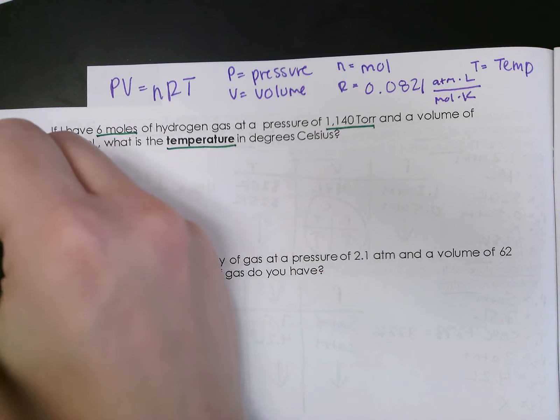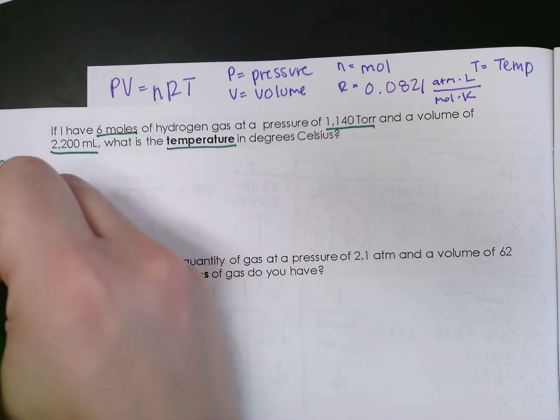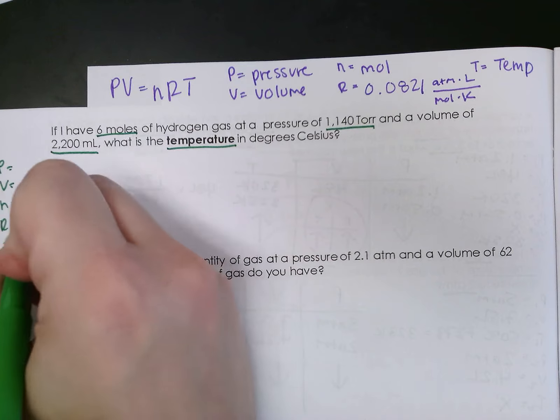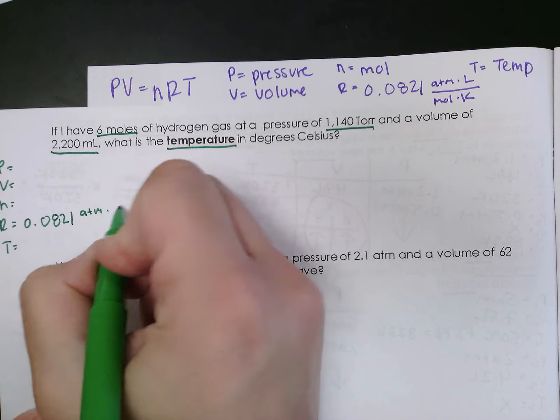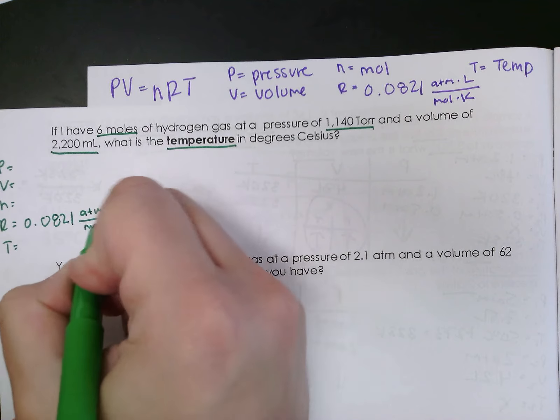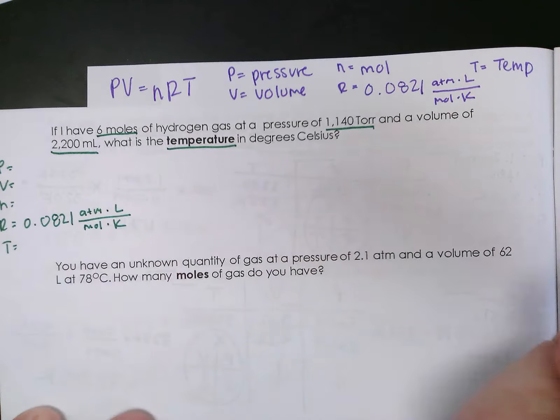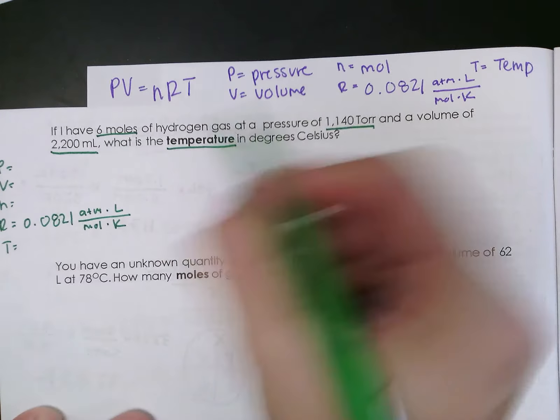So I'm going to go ahead and do my PV in RT over here. You can go ahead and fill in R because you already know what it is. 6 moles, I know moles goes with my n, so I'm going to put a 6 right there.